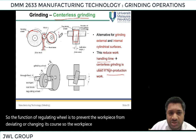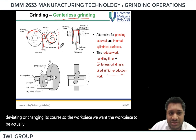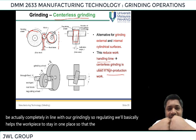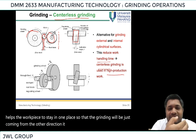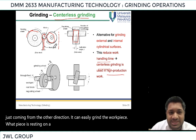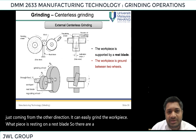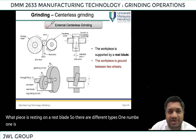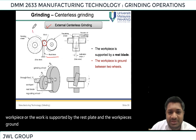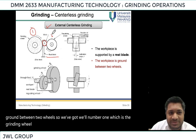We want the work piece to be completely in line with our grinding wheel. The regulating wheel helps the work piece to stay in one place so that the grinding wheel coming from the other direction can easily grind the work piece. In external centerless grinding, the work piece is supported by the rest plate and is ground between two wheels: the grinding wheel and the regulating wheel.